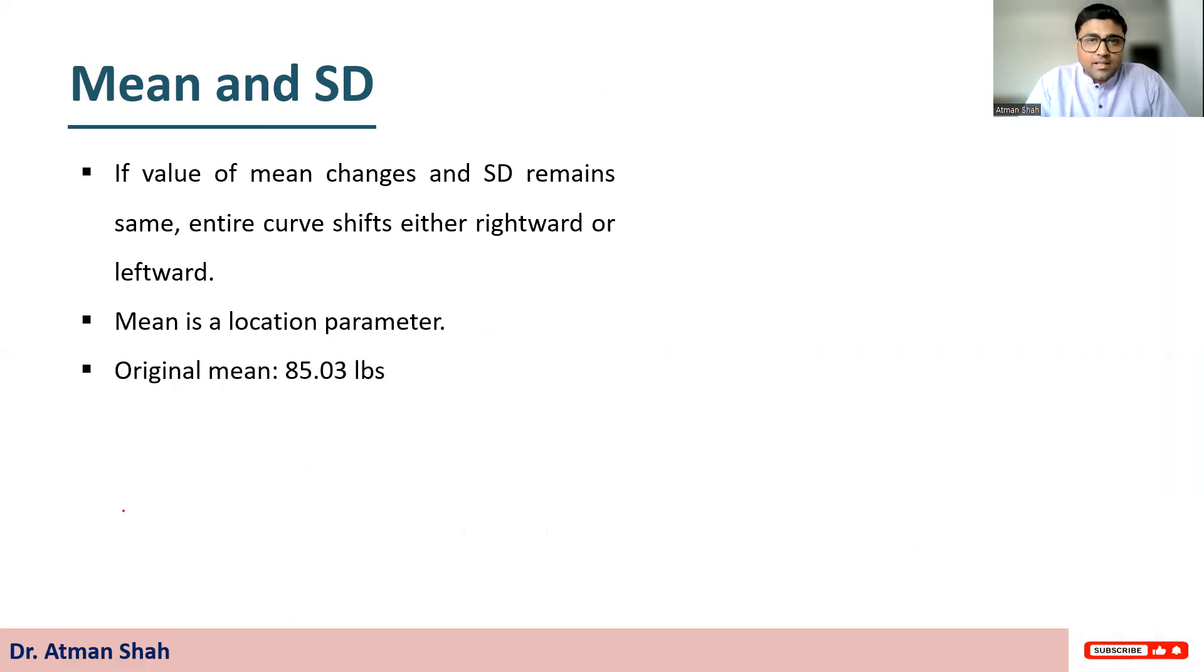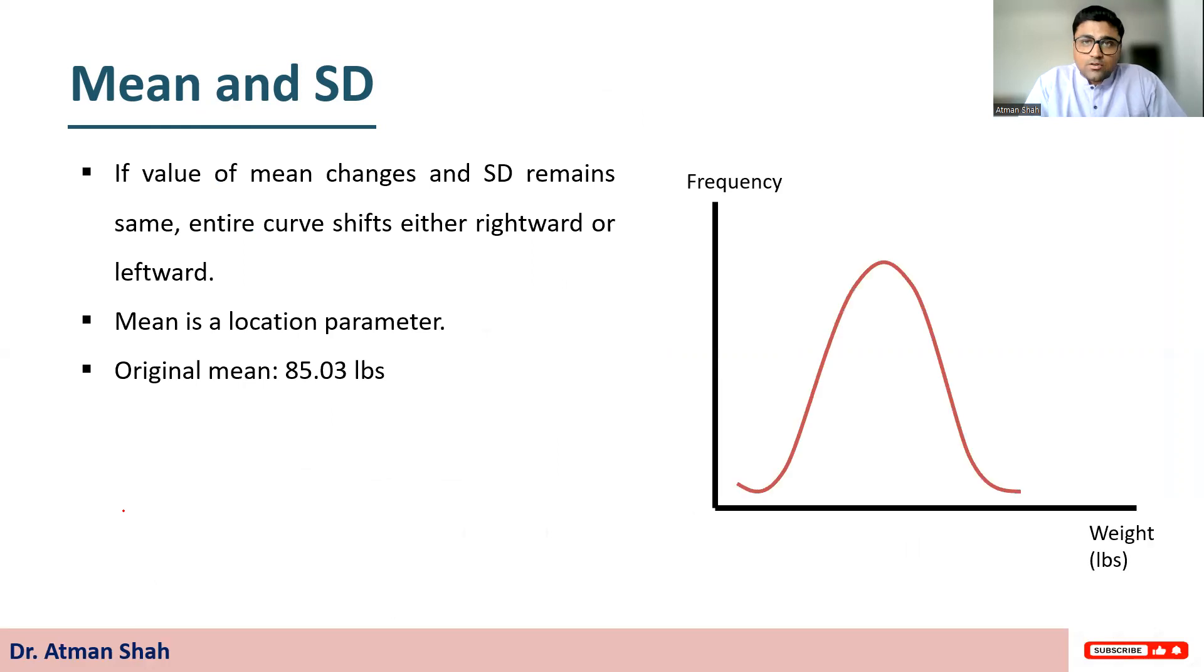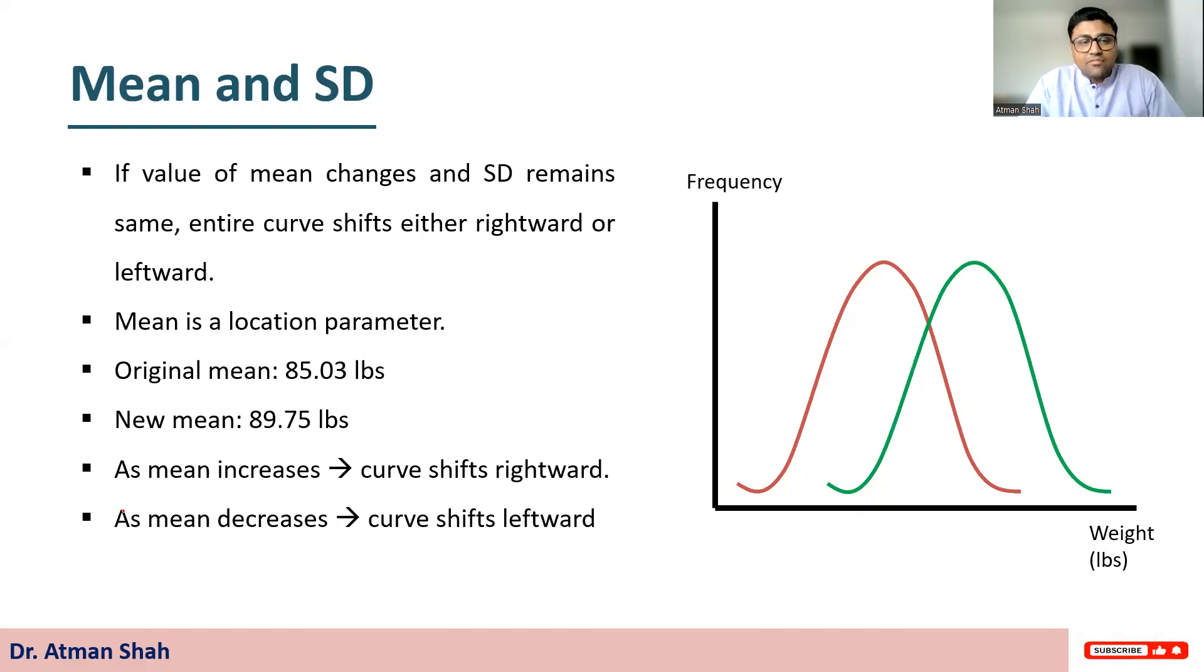Now our original mean is 85.03. See this diagram. Now if mean changes from 85.03 to 89.75, the entire curve shifts rightward. So if the value of mean increases, normal curve shifts rightward. And if the value of mean decreases, normal curve shifts leftward. And that is why mean is a location parameter.